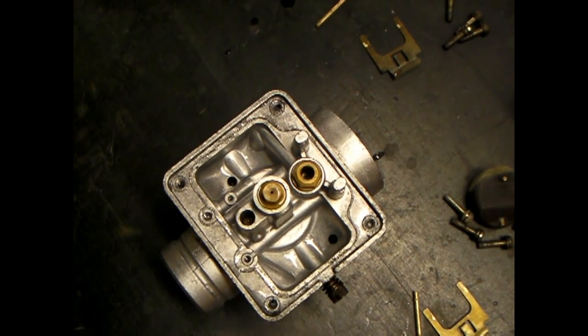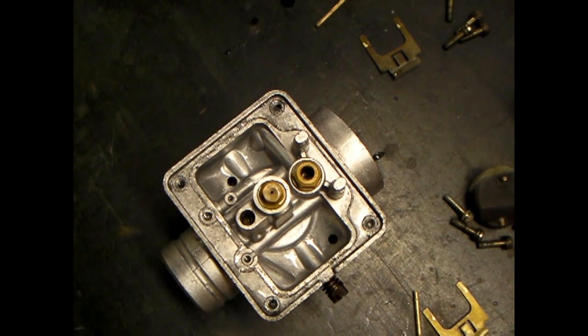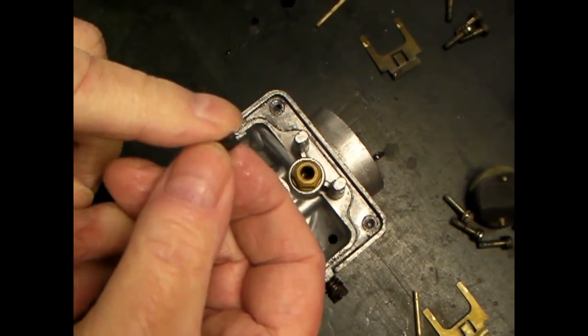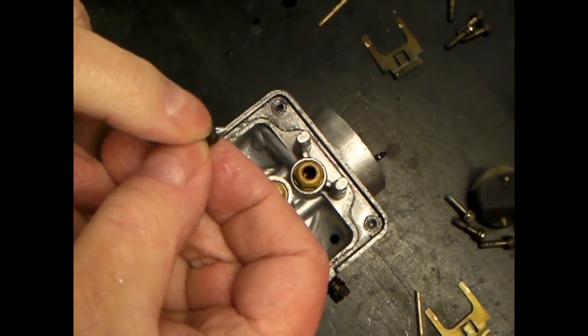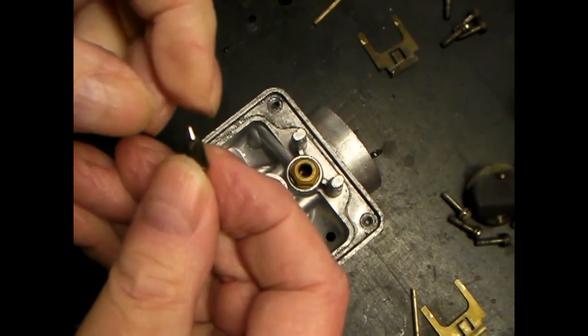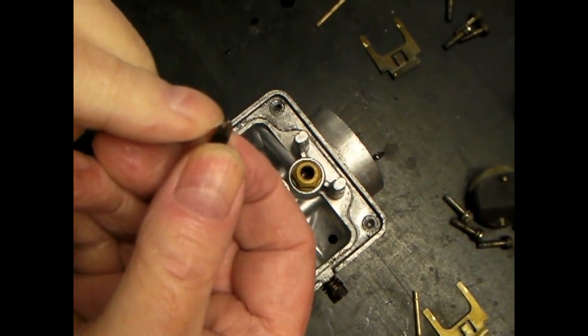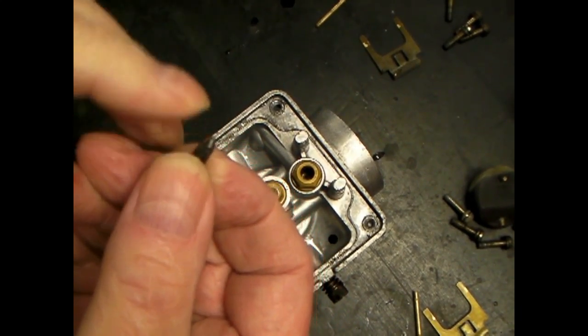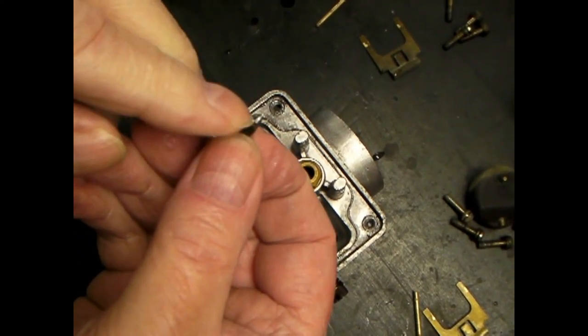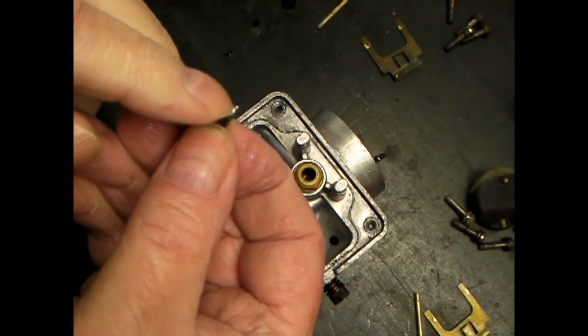Now you'll notice that this needle, it does have a few marks on the seat but I don't see any grooves or anything like that that would be really detrimental to the thing sealing. There's a wear spot on it, it might be hard chrome plated on the end of that thing, but it's not perfect. The needle isn't perfect.